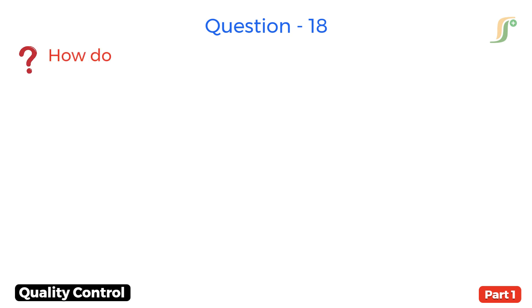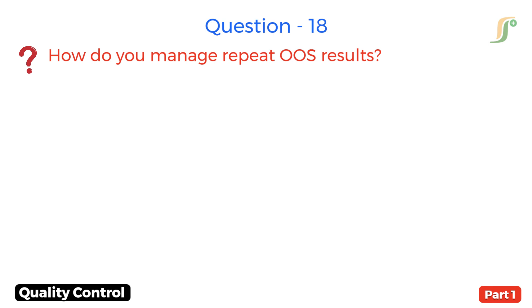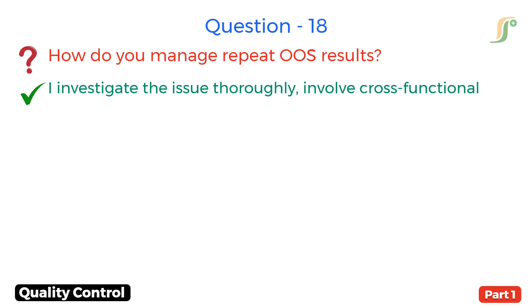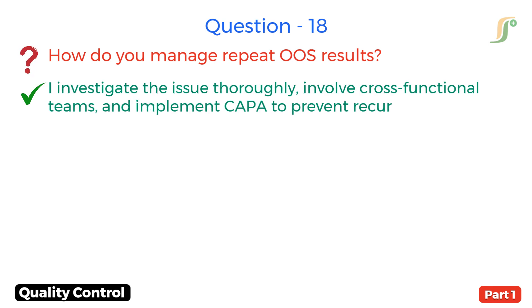Question 18. How do you manage repeat OOS results? Answer. I investigate the issue thoroughly, involve cross-functional teams, and implement CAPA to prevent recurrence.